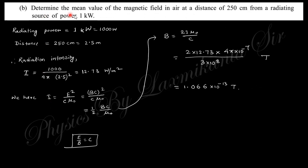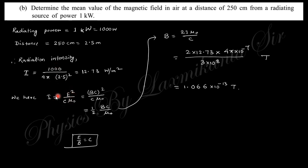The next question says: determine the mean value of the magnetic field in air at a distance of 250 centimeters from a radiating source of power 1 kilowatt. The radiating power is 1 kilowatt = 1000 W and the distance is 250 cm = 2.5 m. The radiation intensity is power divided by surface area 4πr², because the point source radiates spherically. From this radiation intensity you can obtain the value of the magnetic field.